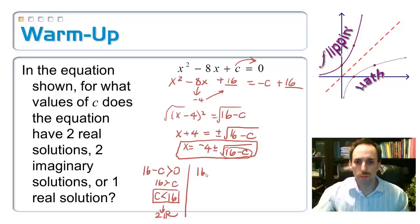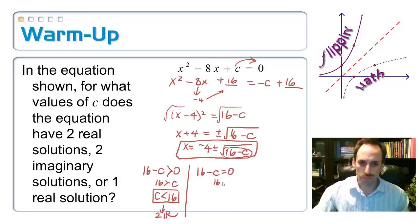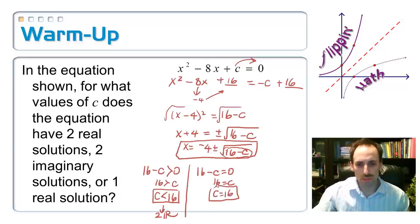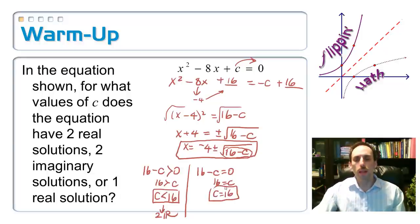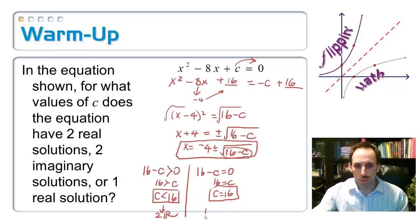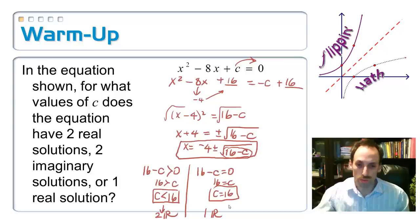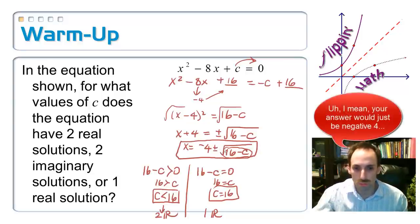If 16 minus C is equal to zero, then C is exactly equal to 16. How many answers are we going to get? We're going to get just one — one real answer — because we're taking the square root of zero, which is just zero. Your answer would just be four because all of that square root business would just disappear.